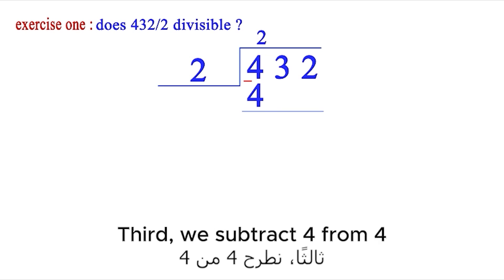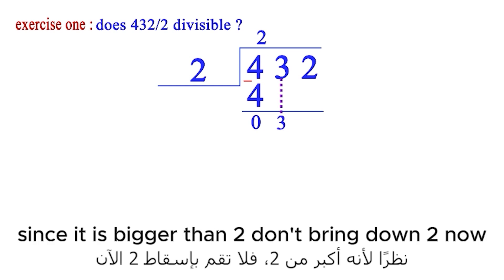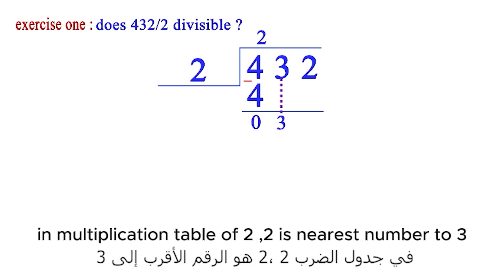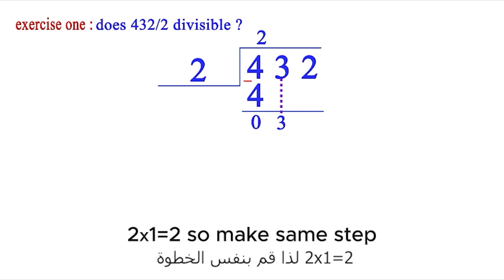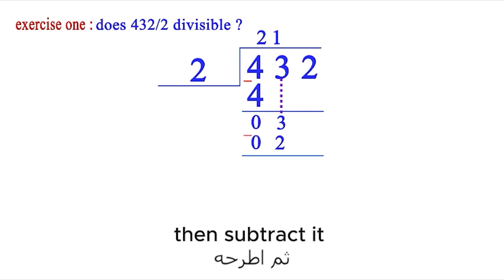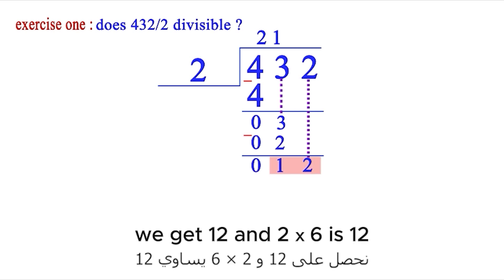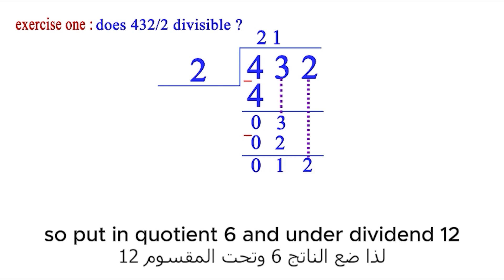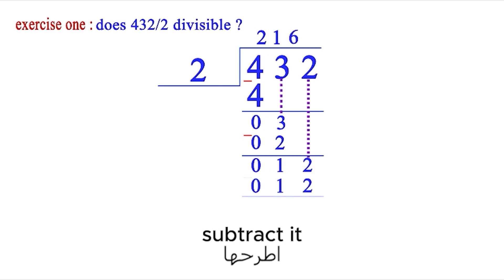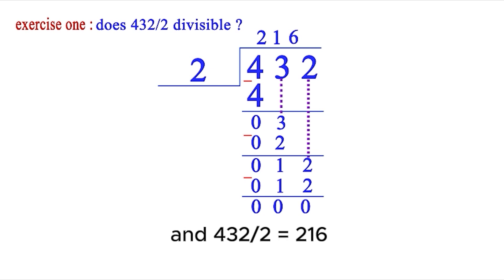Subtract 4 from 4 to get 0. Now bring down 3. Since 3 is bigger than 2, don't bring down the next digit yet. In the multiplication table of 2, the nearest number to 3 is 2. Since 2 times 1 equals 2, put 1 in the quotient and 2 under the dividend, then subtract to get 1. Bring down 2 to get 12. Since 2 times 6 is 12, put 6 in the quotient and 12 under the dividend. Subtract — the remainder is 0, so 432 is divisible by 2. The quotient is 216.